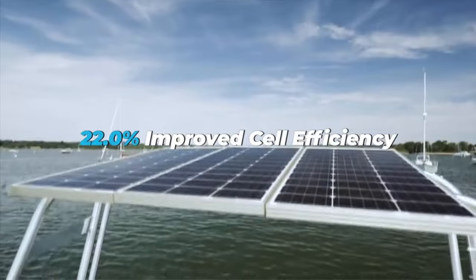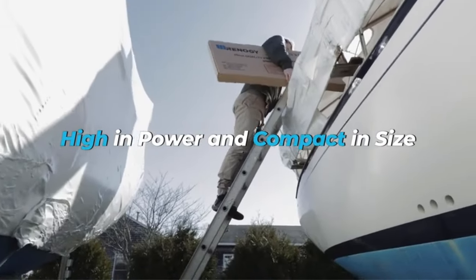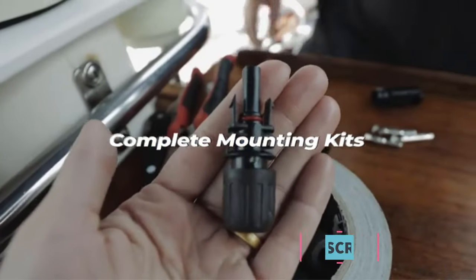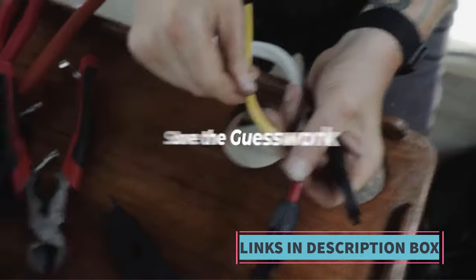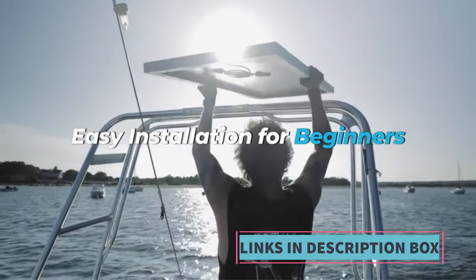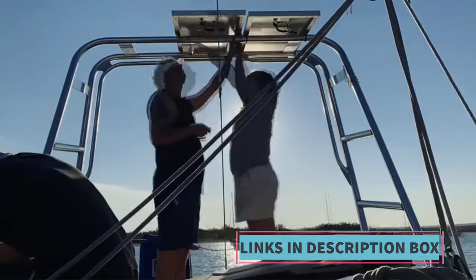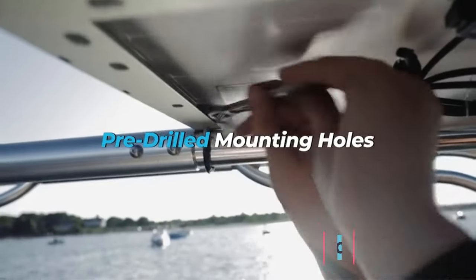The durable construction of the Reno-G Solar Panel 100 Watt 12 Volt makes it suitable for outdoor use, with a sturdy aluminum frame and tempered glass covering that offer protection against environmental factors such as rain, snow, and hail. Reliability and performance make it a dependable solution for remote power generation.